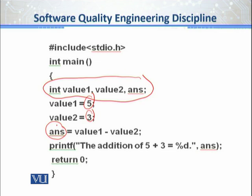If you analyze this program, you will just see the catch here. I wanted to add two values. Now that's a fault — this is an error. It will not be correct, this is for sure. The reason is that the line of code is very small, so I can simply analyze it.